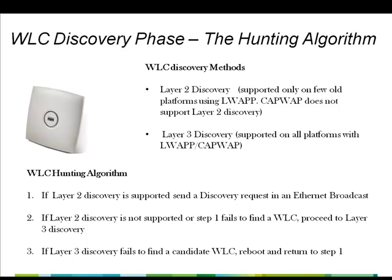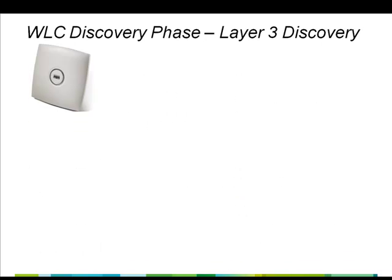Let us now look at Layer 3 Discovery methods in detail. The lightweight access points use the Layer 3 Discovery algorithm if the Layer 2 Discovery method is not supported or if Layer 2 Discovery fails. The Layer 3 Discovery algorithm uses different options to discover controllers and to build a controller list. First, the access point broadcasts a Layer 3 Discovery message on its local IP subnet. Any wireless LAN controller configured for Layer 3 mode that is connected to the local IP subnet will receive the Layer 3 Discovery message and reply with a unicast Discovery response to the access point.